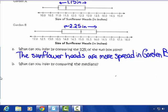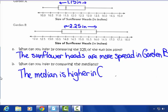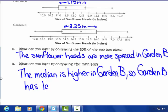What can you infer by comparing the medians? Well, the median of Garden A is 11.5 inches, the median of Garden B is 15 inches. So the median is also higher, is higher in Garden B, that 15 inches compared to the 11.5 inches. So Garden B has larger sunflowers, larger headed sunflowers or larger sunflowers.